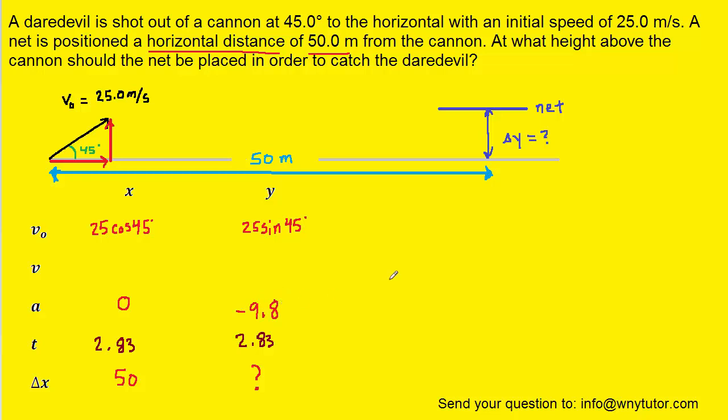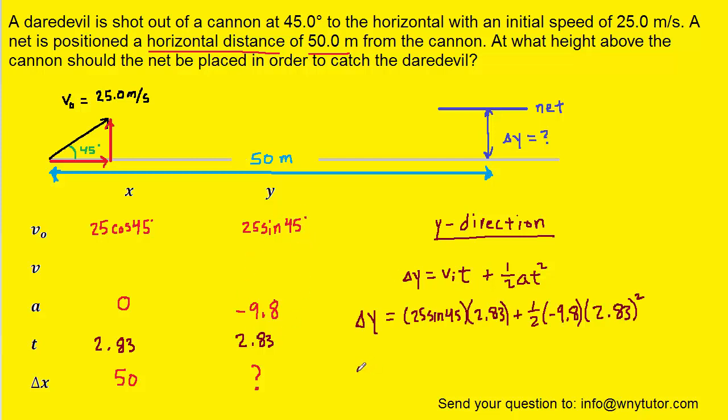So we're going to use the same formula from kinematics that we just used in order to calculate the displacement in the y direction. Notice that we're now using delta y to denote the displacement rather than delta x, but the equation is otherwise the same. So we'll plug in all the known values on the right side that we have in the y direction. And after computing that, we see that the delta y, the displacement in the y direction, is 10.8 meters.